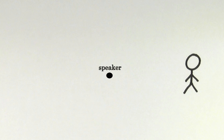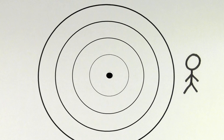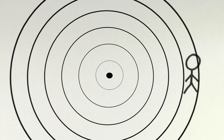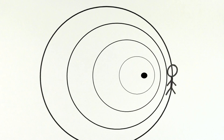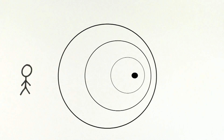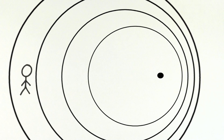The frequency that you'll observe when standing next to a speaker is determined by the rate at which wave crests strike your location. If the speaker moves toward you, you'll hear a higher frequency. And if the speaker moves away from you, you'll hear a lower frequency.